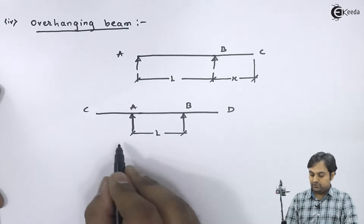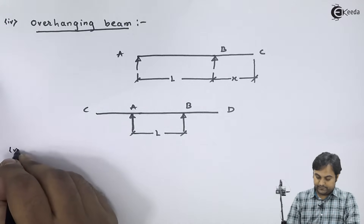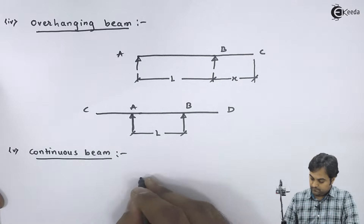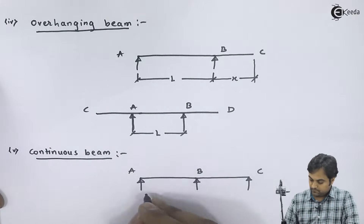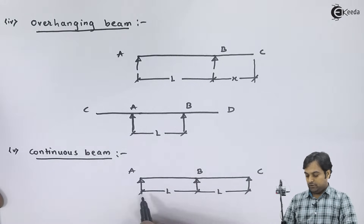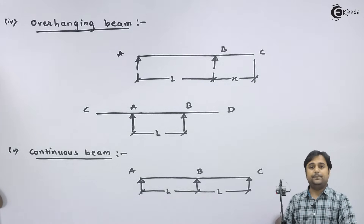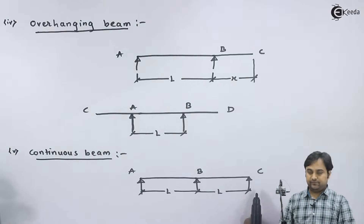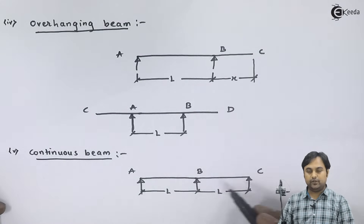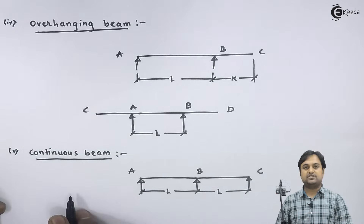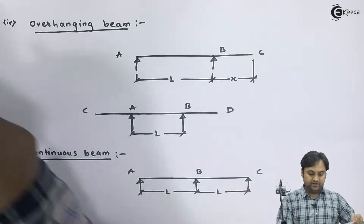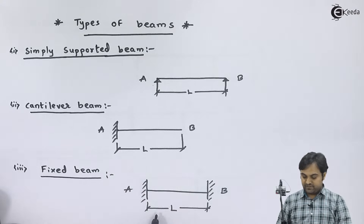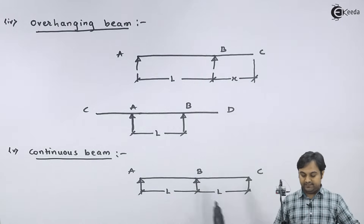Next we have the continuous beam. A beam which has more than two supports is called a continuous beam. A continuous beam is also like a simply supported beam — it is supported at the ends, and apart from the supports at the ends, it should have some support in between A to C. We have seen different types of beams: simply supported beam, cantilever beam, fixed beam, overhanging beam, and continuous beam.